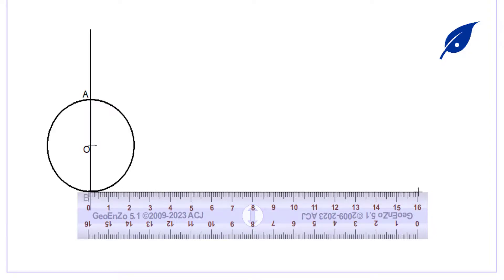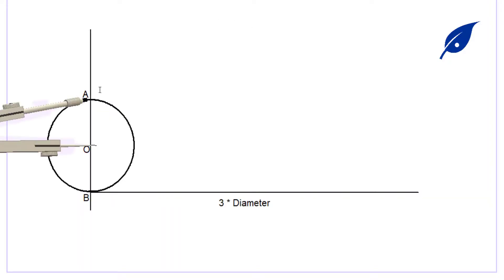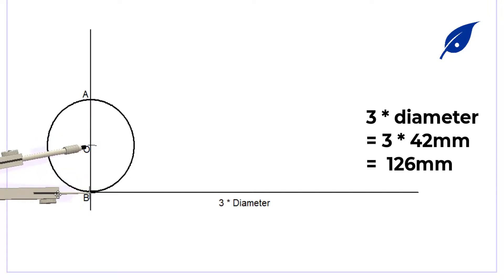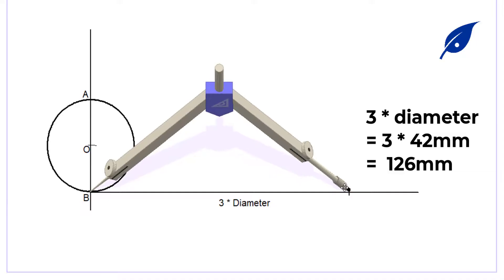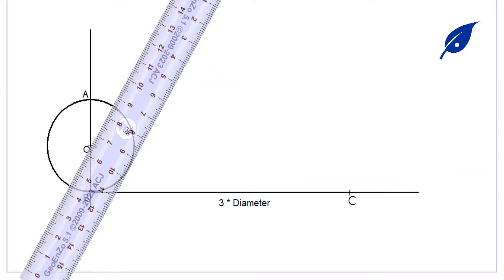After drawing this horizontal line, the distance of this horizontal line is three times the diameter. So three times 42 millimeters is going to give us 126 millimeters. From point B we'll mark to get point C.